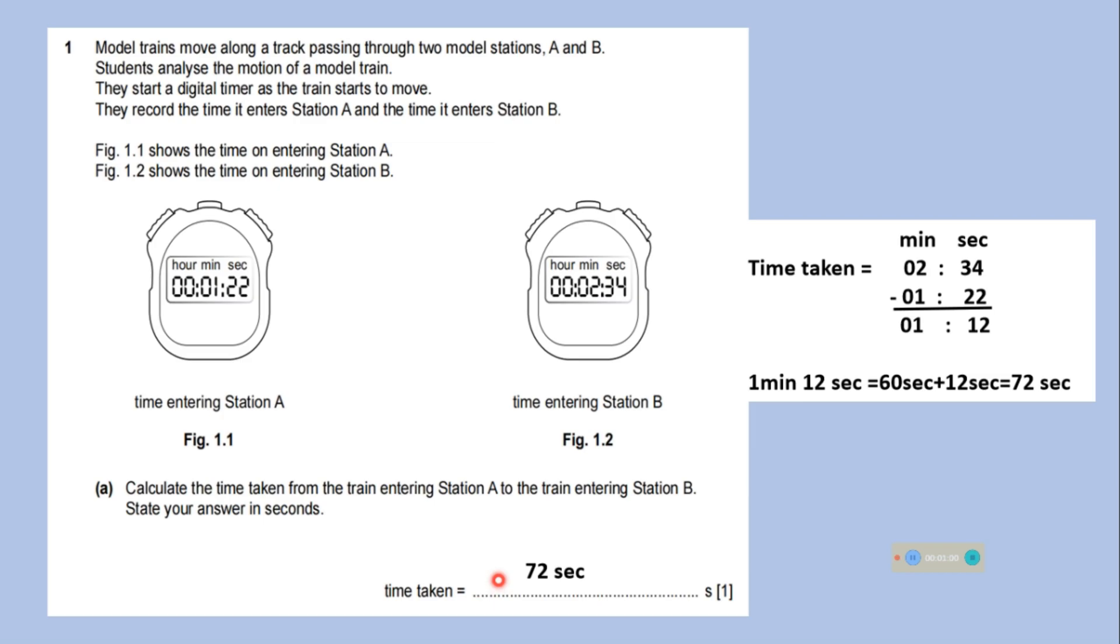Here the time taken is the subtraction of these two times. Here the subtraction has been shown. You can pause the video and see how we have subtracted. So time taken is 72 seconds and we have to convert our answer in seconds. So final answer is 72 seconds.